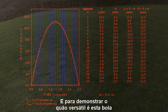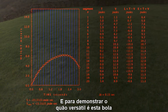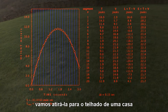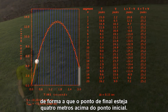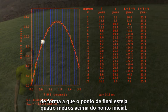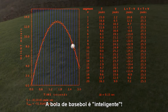And to demonstrate how versatile this baseball is, let's throw it onto the roof of a house, so the end point is 4 meters higher than the initial point. The method still works pretty well. Smart baseball!